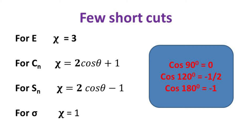Important cosine values: cos 90° (for C4) = 0; cos 120° (for C3) = −½; cos 180° (for C2) = −1. Therefore: character for C4 (θ = 90°) = 2(0) + 1 = 1; character for C2 (θ = 180°) = 2(−1) + 1 = −1; character for C3 (θ = 120°) = 2(−½) + 1 = 0. For the improper rotation S4 (θ = 90°), character = 2cos90° − 1 = −1.